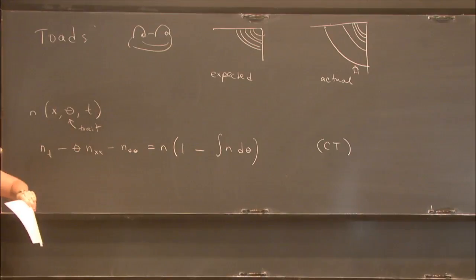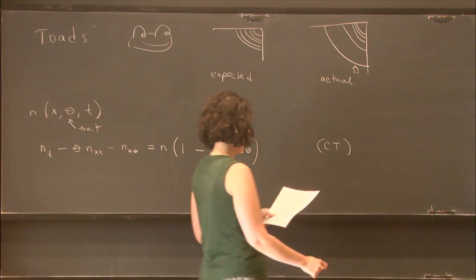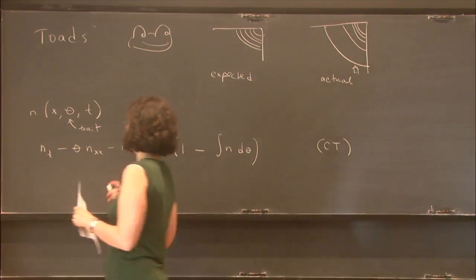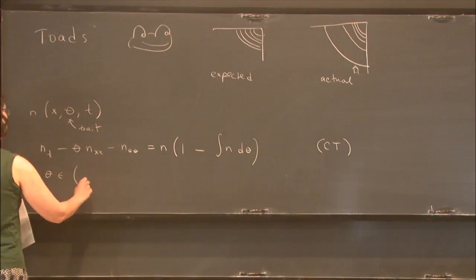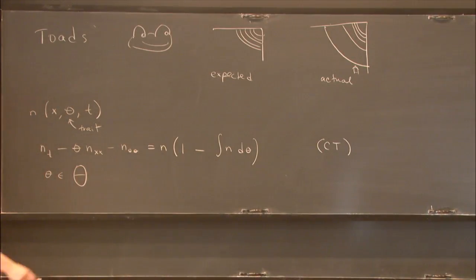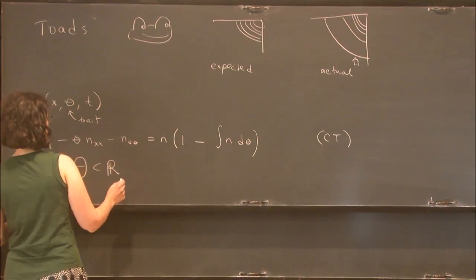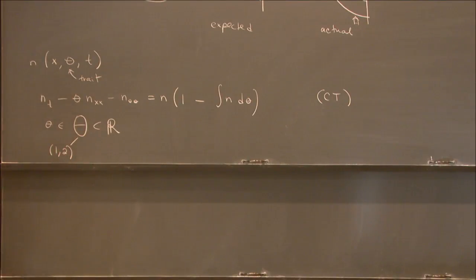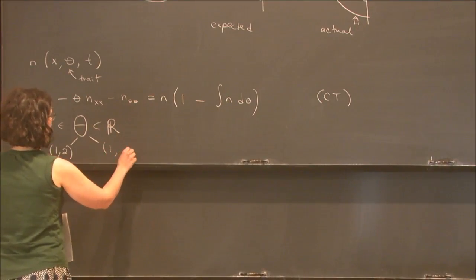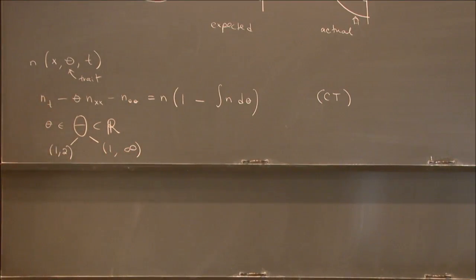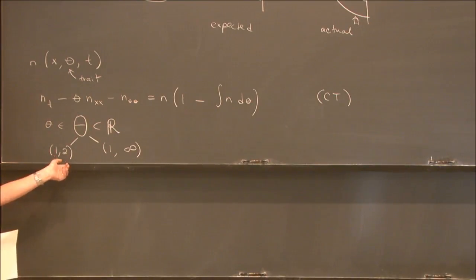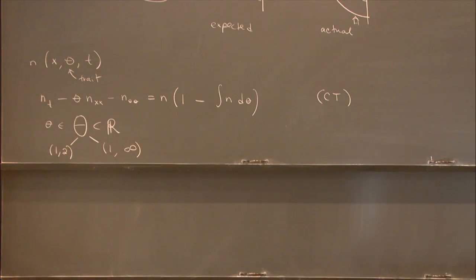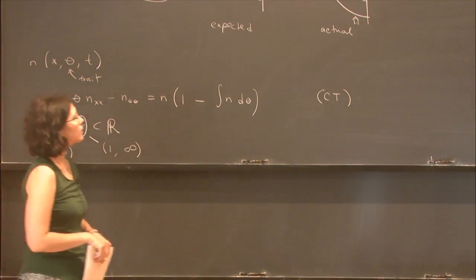Before I go on, the trait θ lives in some trait space Θ, which is also a subset of ℝ. The behavior differs depending on whether Θ is a bounded interval — say [1, 2] — or an unbounded interval — say [1, ∞). One important point is that the bottom of the interval is bigger than zero, but you get different behaviors in these two cases.